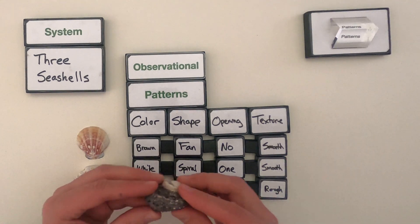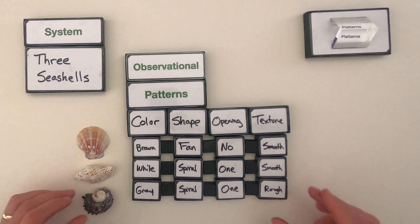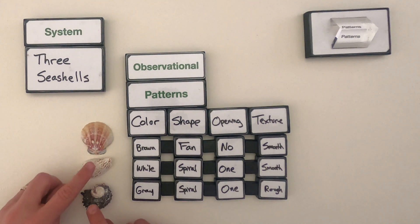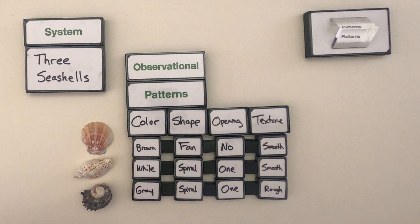As I feel them, the brown shell is going to be really smooth. This one's smooth, but this one is really, really rough. So I'm starting to see that even though these look similar, we're starting to see some differences between these two.